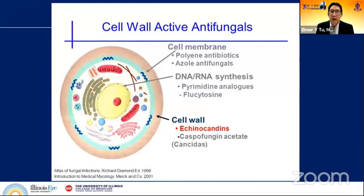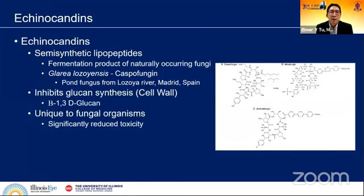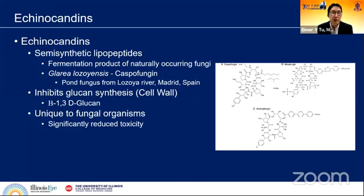Looking at cell wall-active antifungals, it's primarily polyene antibiotics and azole antifungals — inhibitors of cell wall synthesis. They inhibit either ergosterol, in the case of azoles, or the beta-glucan portion in the case of echinocandins. We had one patient treated with caspofungin systemically which seemed to have some effect, but the large chemical structure may have difficulty getting through the cyst wall, so it may be primarily active against trophozoites.